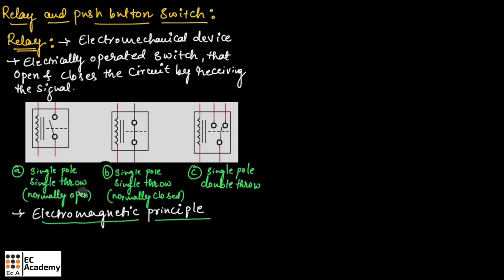This relay is available in three configurations. First one is single pole single throw, which is normally open. The second one is single pole single throw, which is normally closed. And single pole double throw. For normally open SPST relay, the circuit is normally open and it becomes closed when the relay is energized. For normally closed SPST configuration, the circuit is normally closed and it will become open when the relay is energized.